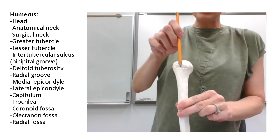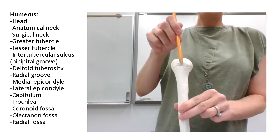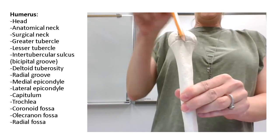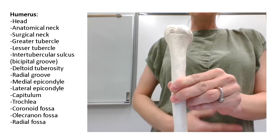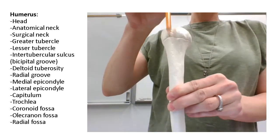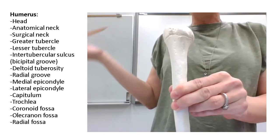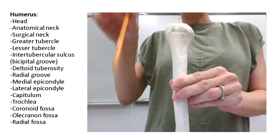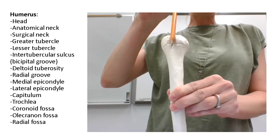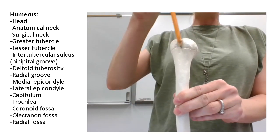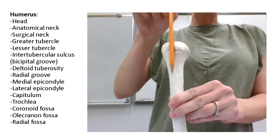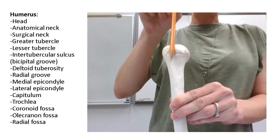There's a little groove right here that goes between those two tubercles. That groove is called the intertubercular sulcus, also called the bicipital groove, because the tendon from the biceps brachii goes right through this little groove. So lesser tubercle is in the front, greater tubercle is out lateral, and the intertubercular sulcus is the groove right between them.